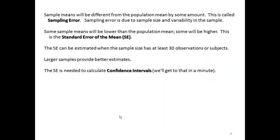Sample means will be different from the population mean by some amount. This is called sampling error. Sampling error is due to sample size and variability in the sample. Some sample means will be lower than the population mean and some will be higher. This is the standard error of the mean. The SE can be estimated when the sample size has at least 30 observations or subjects. Don't forget that wonderful number of 30.